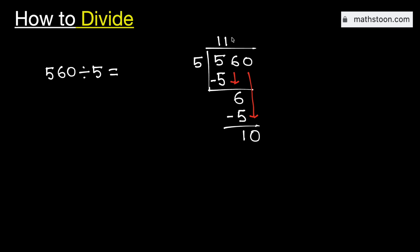We know that 5 times 2 is 10. Subtract, we get 0. As we have no number to bring down here, and we have got the number 0, so we will stop.